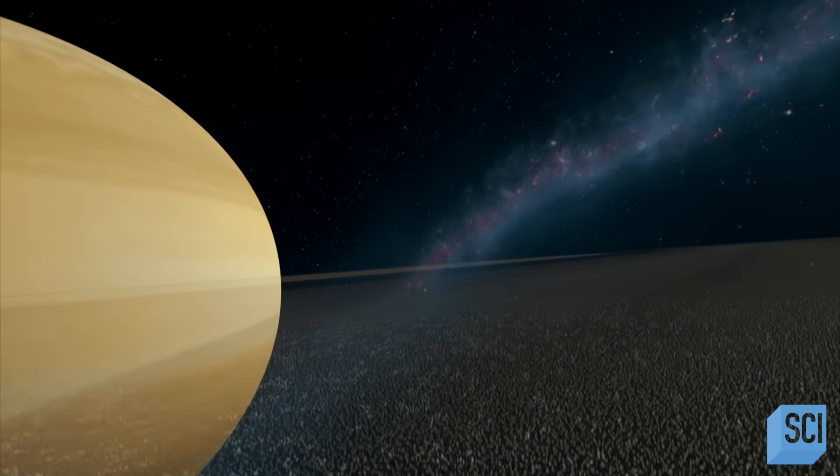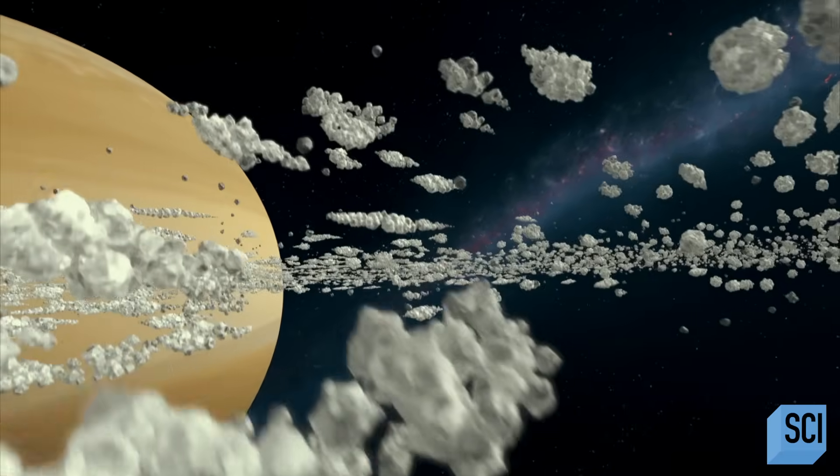When we look at Saturn's rings from Earth, they look fairly static. They're just the way they are. Now that we've seen them up close, we see it's an incredibly dynamic system evolving all the time.